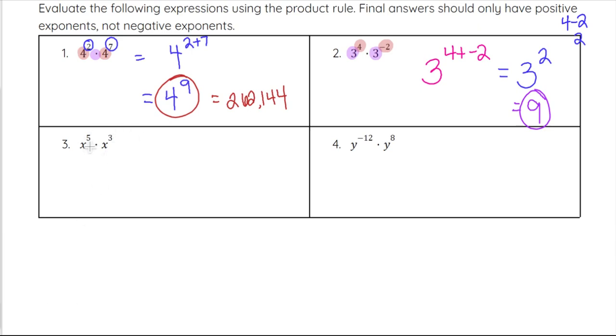On number 3, we have x as our base in each of these. And again, we are multiplying these bases together. So x to the 5th times x to the 3rd. So what we are going to do is we are going to go ahead and add those exponents. So 5 plus 3. 5 plus 3 is 8. And so our answer here is x to the 8th. We can't simplify that any further, because we have a variable base, not a numerical base.